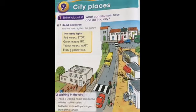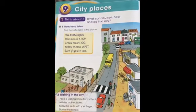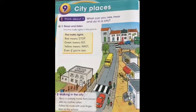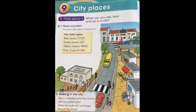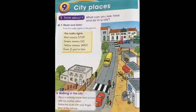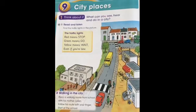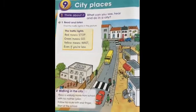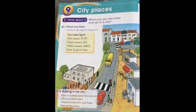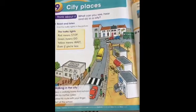Now, my students, move to exercise number two: Walking in the City. Here, my students, we have a boy named Baco. He's walking home from school with his mother. Now, we want to listen and follow his route with your finger. You should start at the school. Listen carefully and follow Baco's route with your finger. Don't forget that you should start from the school.